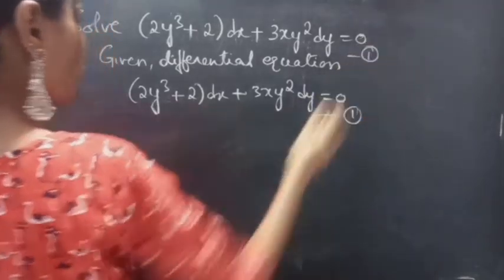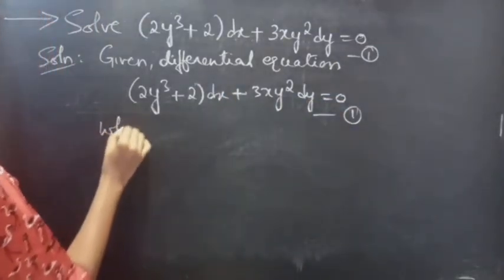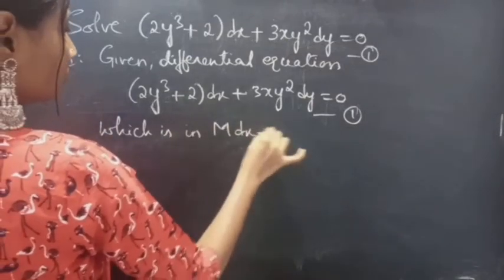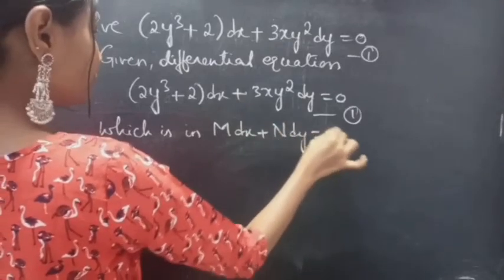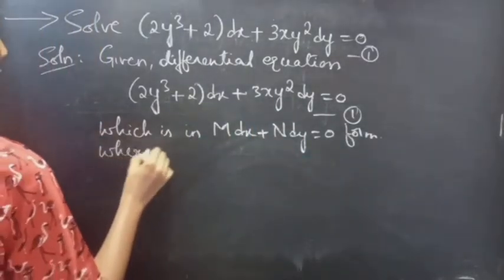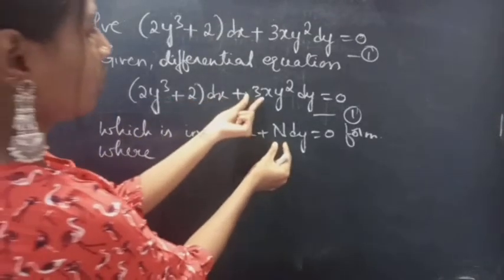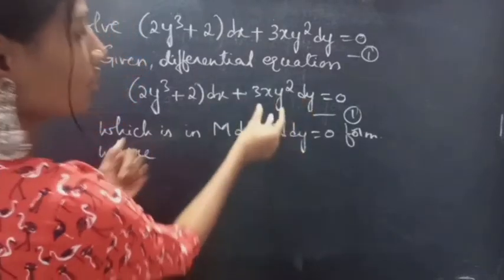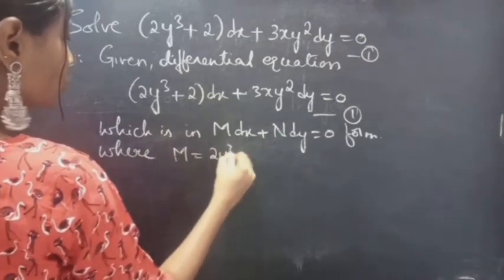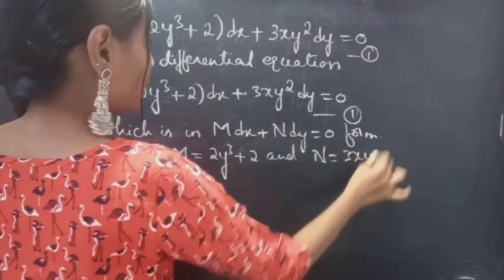Consider equation 1, which is in the form M·dx + N·dy = 0. By comparing these two, we will get M and N. The coefficient of differential dx is M and coefficient of differential dy is N. Where M = 2y³ + 2 and N = 3xy².